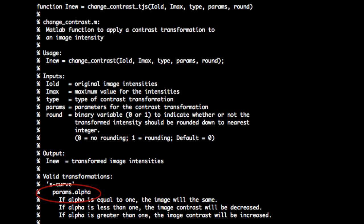The parameter alpha is passed through a structure variable called params. Structure variables are useful for situations like this when a different transformation might have more than one parameter.